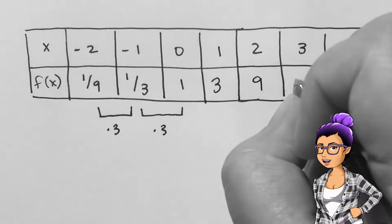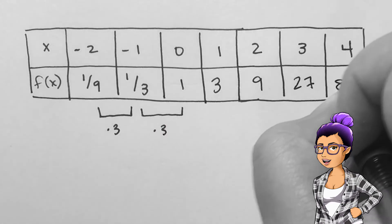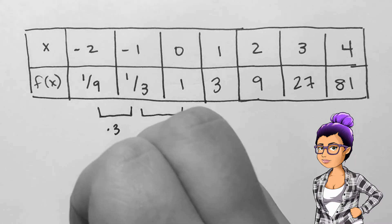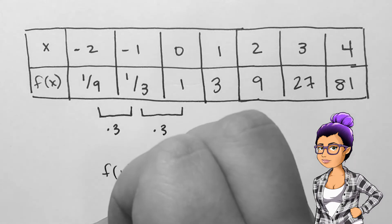So as we move up to 0, we multiply 1/3 by 3 to get 1. As we move to 1, we multiply by 3 again to get 3, then 9, then 27, and 81.